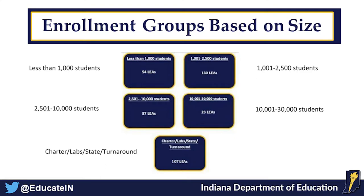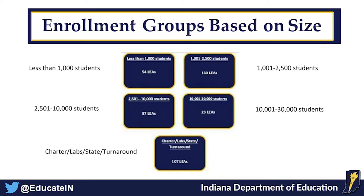In the past, all districts were combined in one big group. We got feedback that smaller districts were being compared to the size of Fort Wayne, which wasn't ideal for quintile groupings. Brandon laid out all districts by population and found natural breaks. Less than 1,000 students is one group with 54 districts; 1,001–2,500 has 130 districts; and so on. Charter schools, lab schools, state schools, and turnaround schools were placed in their own category since comparing one building to a whole district skewed the data.